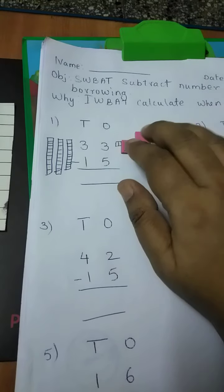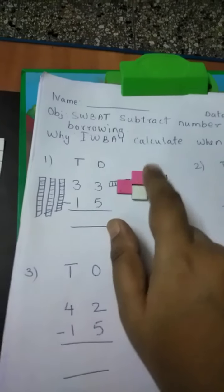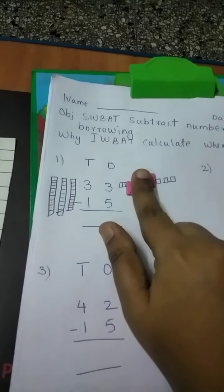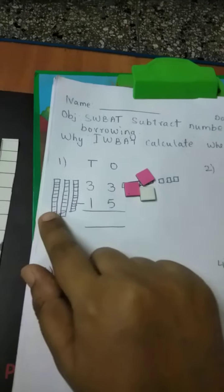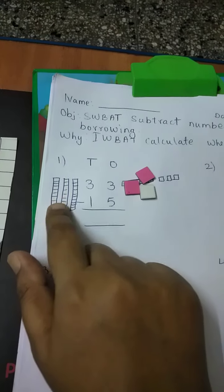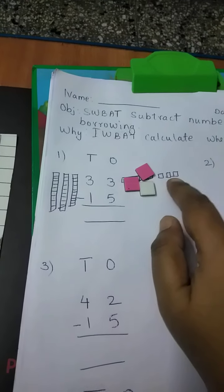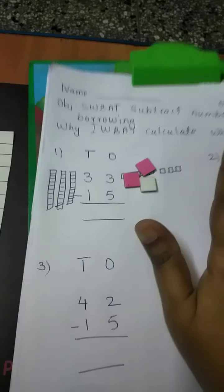How do we write 33? 3 tens, 1, 2, 3 tens and 3 units, right? So we are going to draw the same thing. We are going to draw 3 tens and 3 units or ones. I have drawn the number 33.